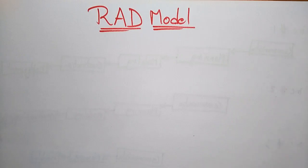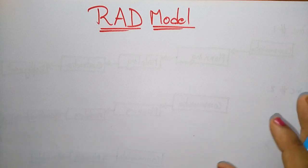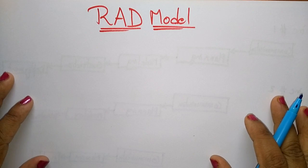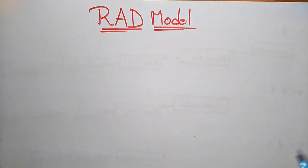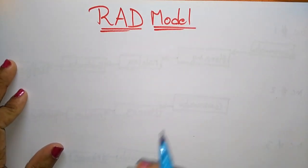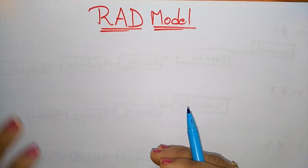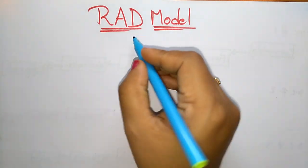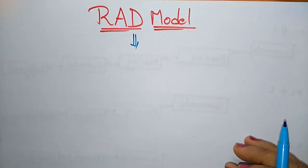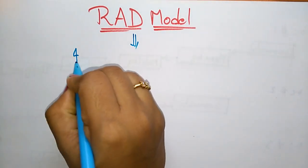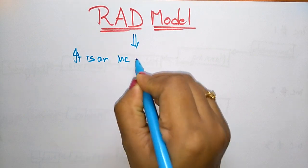Coming to the next prescriptive process model, that is the RAD model. In the previous videos I explained about the waterfall model and the incremental model, which come under the prescriptive process model. Now coming to the third one, that is the RAD model. RAD is actually an incremental model — we call it an extension of the incremental model. It is an incremental model that emphasizes on extremely short development cycles.